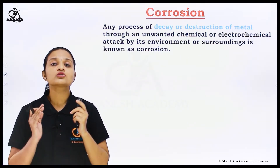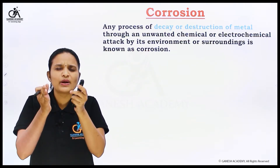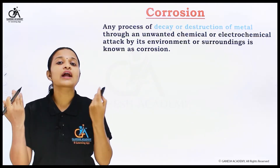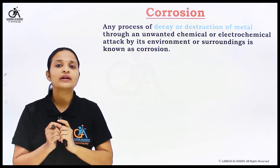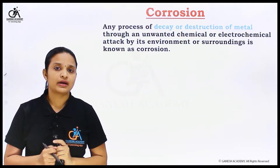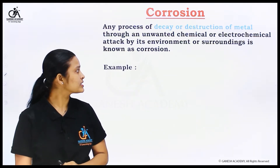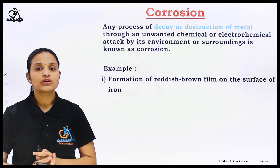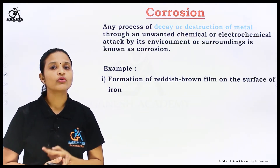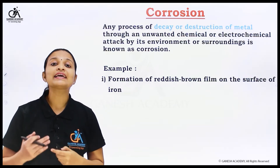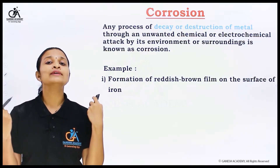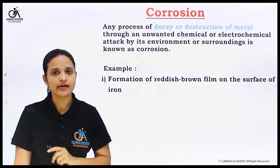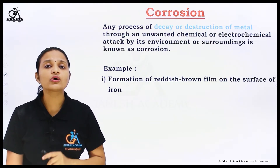To repeat this point: corrosion is basically a destruction of metal that takes place due to the surrounding medium — due to surrounding chemicals that come in contact with the metal, causing rusting on that metal. For example, the first example is the formation of a reddish-brown film on the surface of iron. Due to surrounding conditions and surrounding media, a reddish-brown precipitate forms on the surface of iron, and we call it rusting or corrosion of iron.